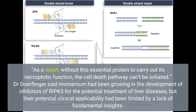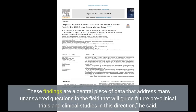As a result, without this essential protein to carry out its necroptotic function, the cell death pathway cannot be initiated. Dr. Dorfelinger said momentum had been growing in the development of inhibitors of RIPK3 for the potential treatment of liver diseases. These findings are a central piece of data that address many unanswered questions in the field that will guide future pre-clinical trials and clinical studies in this direction.